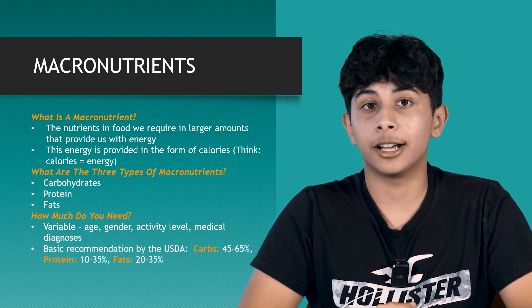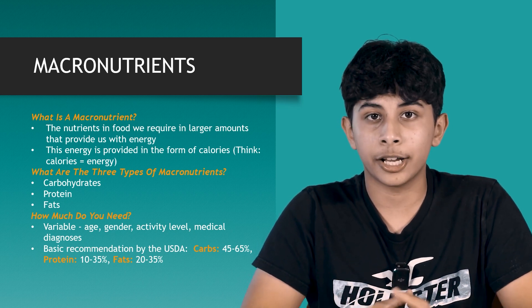The United States Department of Agriculture, the USDA, recommends a general split of the three macronutrients. Basically, it recommends that out of all the calories you consume each day, 45 to 65% should be from carbohydrates, 10 to 35% should be from protein, and 20 to 35% should be from fat.